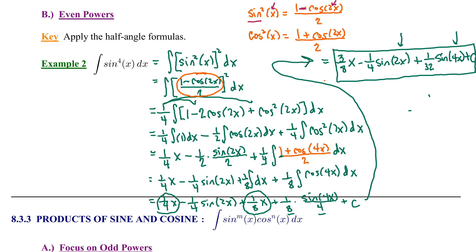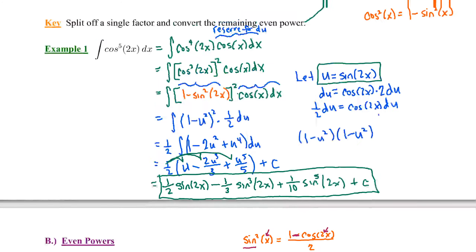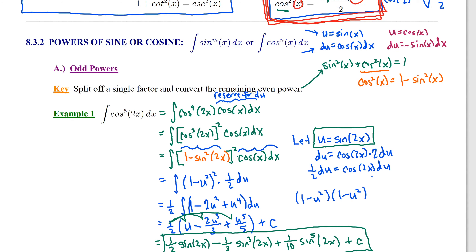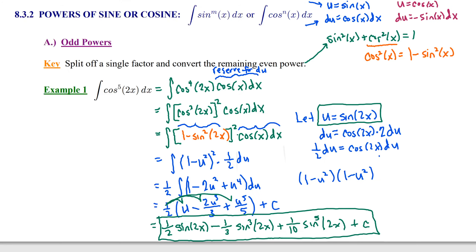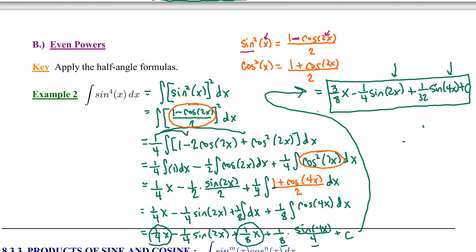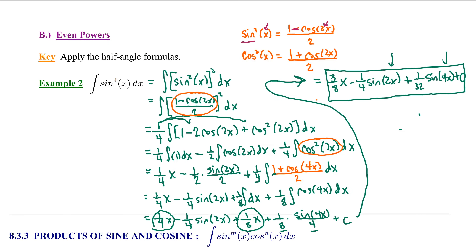In this video, you learned that for a power of sine alone or cosine alone, the strategy depends on the power. For an odd power, split off a single factor for du and convert the remaining even power to the opposite trig function using the Pythagorean identity. For an even power, replace it using the equivalent half-angle identity — and you may have to do that multiple times in one problem. In the next video, we'll start looking at products of powers of sine and cosine.